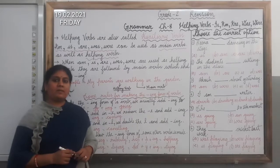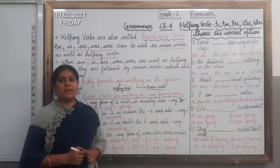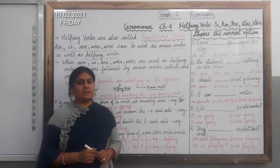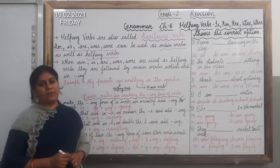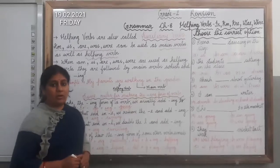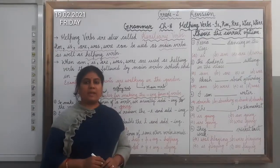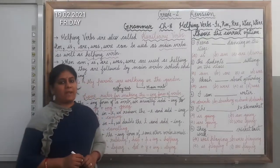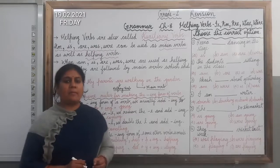Good morning children, welcome to the English class. In today's session, we are going to revise chapter number 8 from your grammar book. And the title of this chapter is Helping Verbs: is, am, are, was, were.